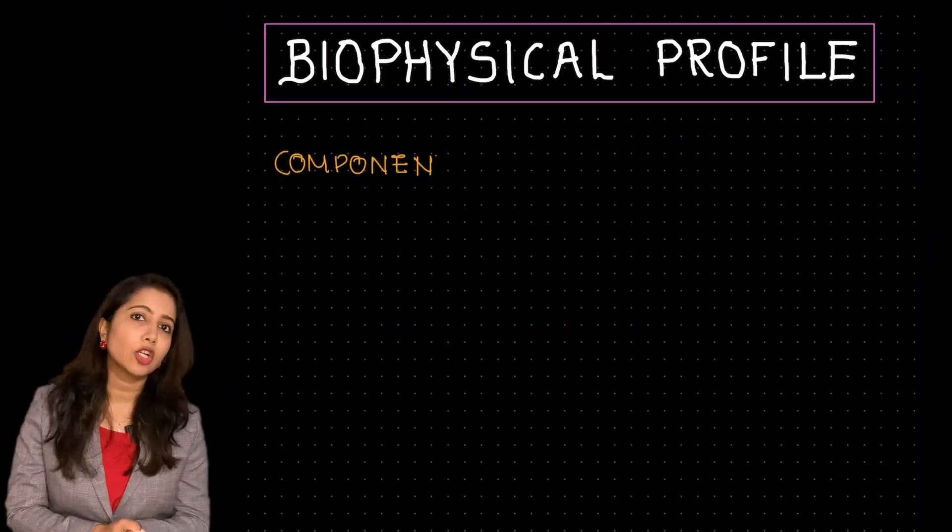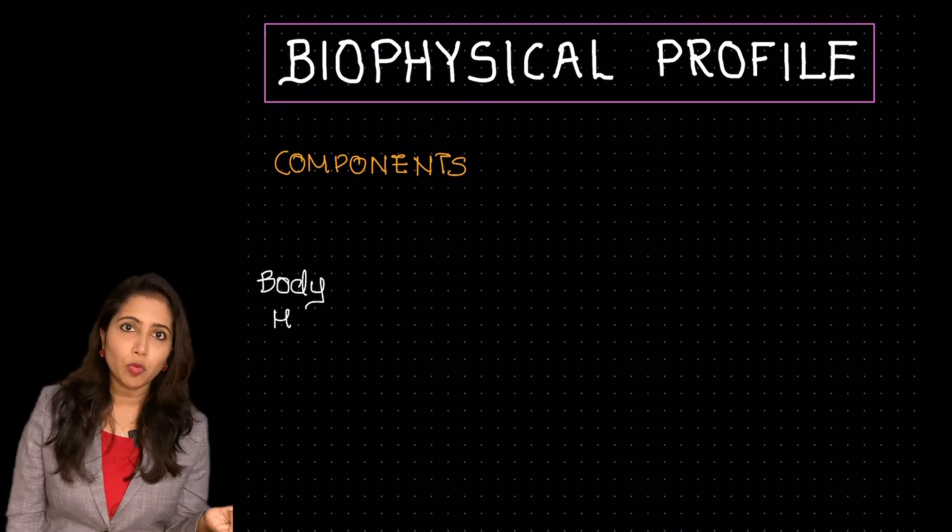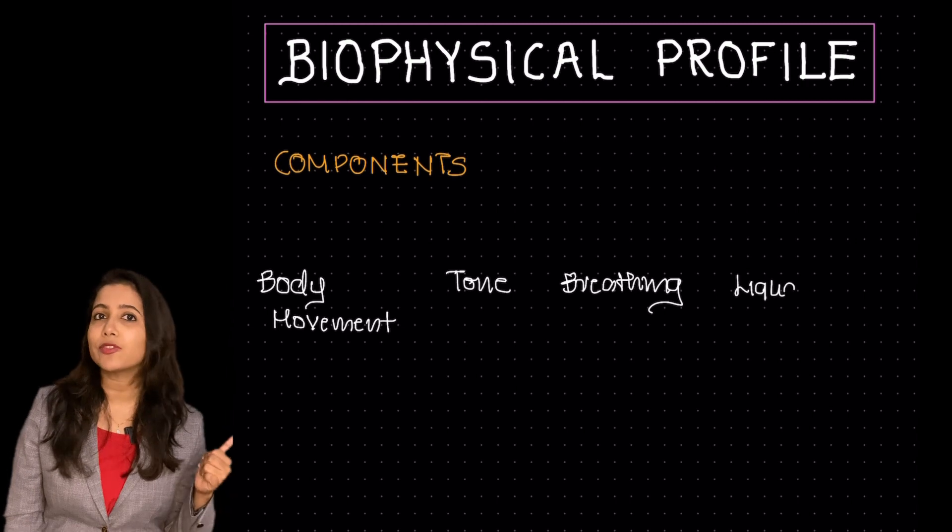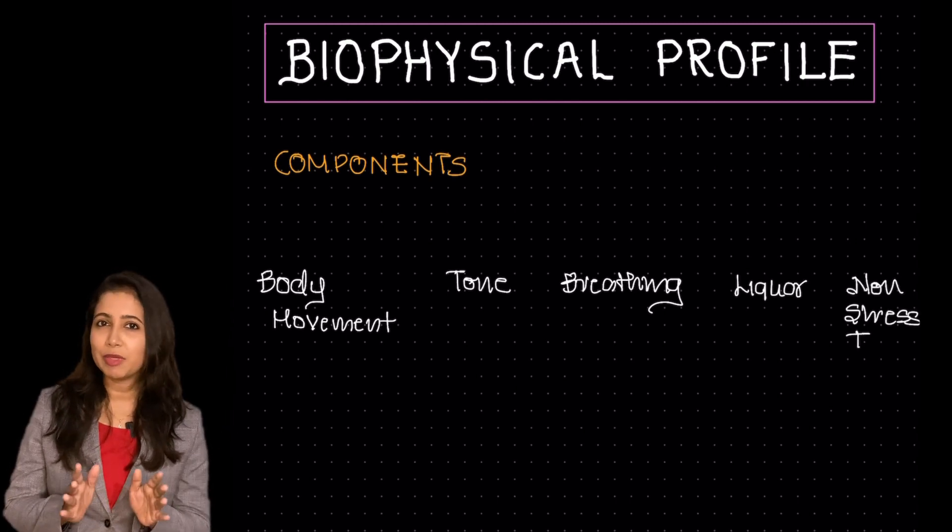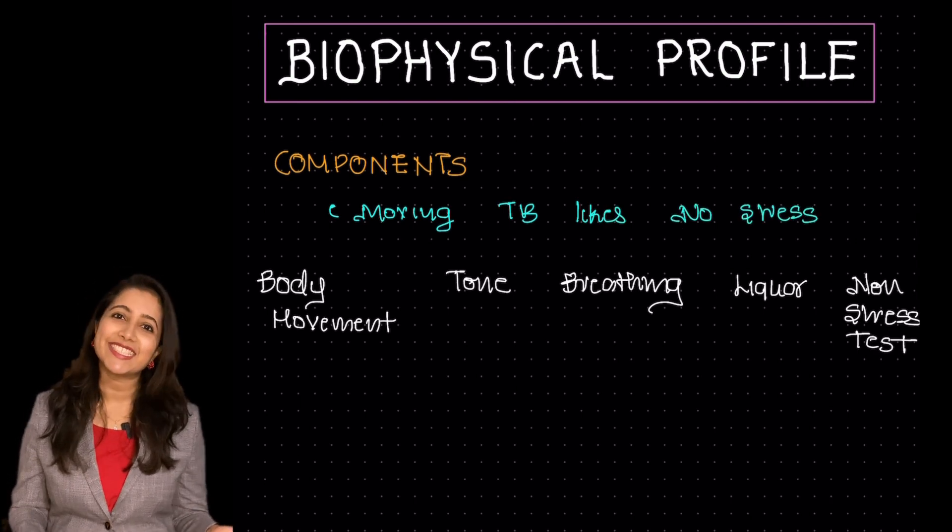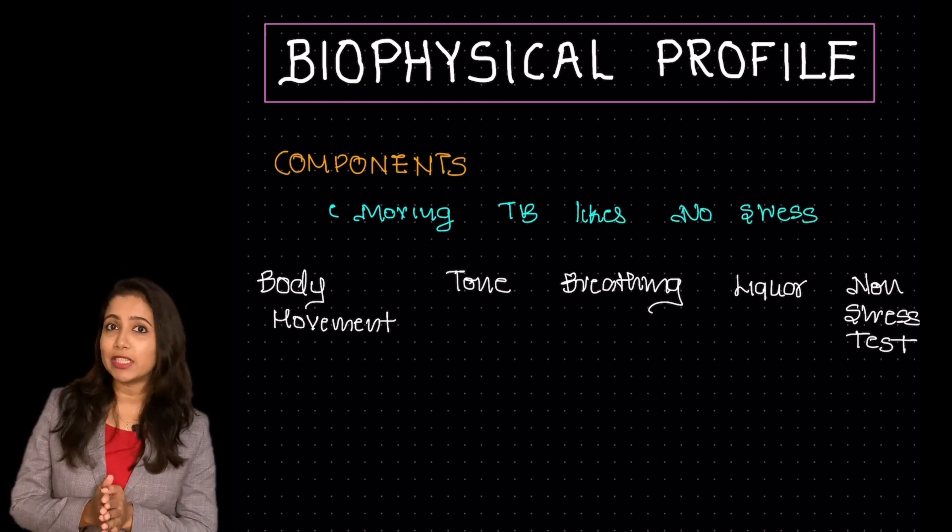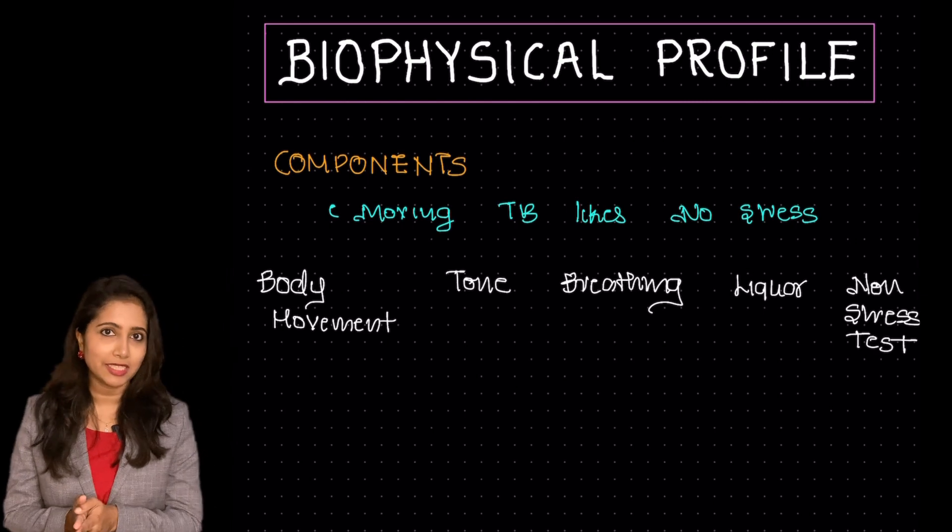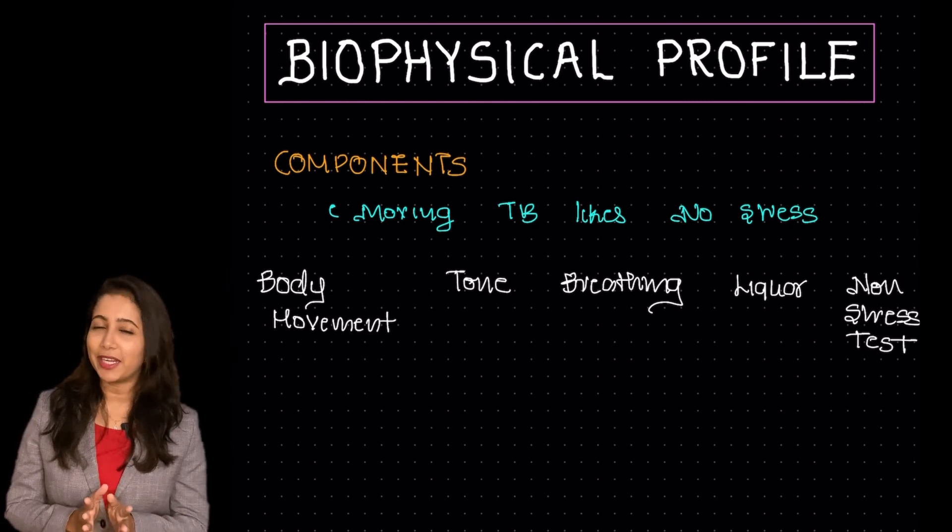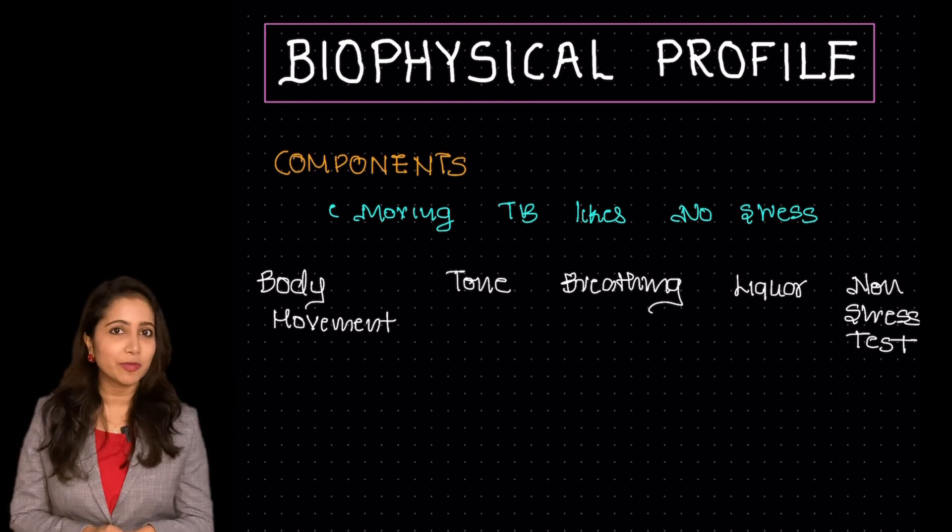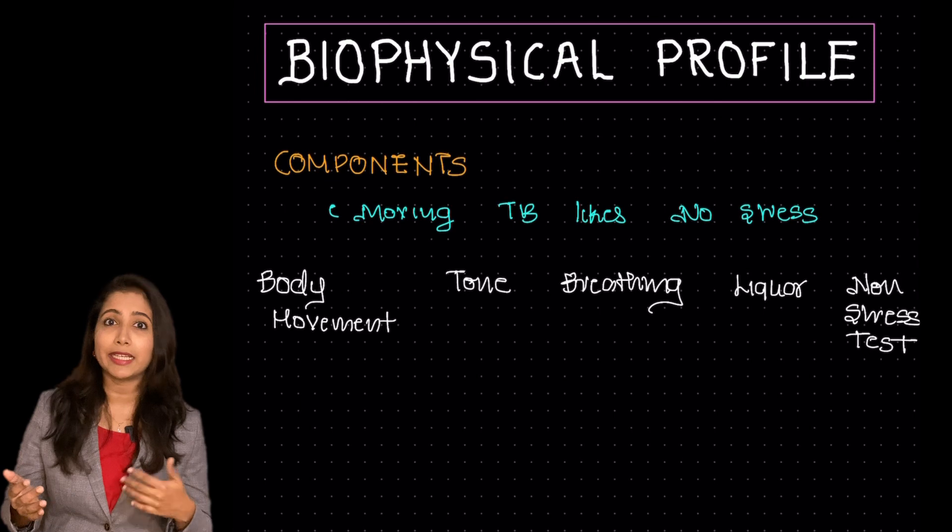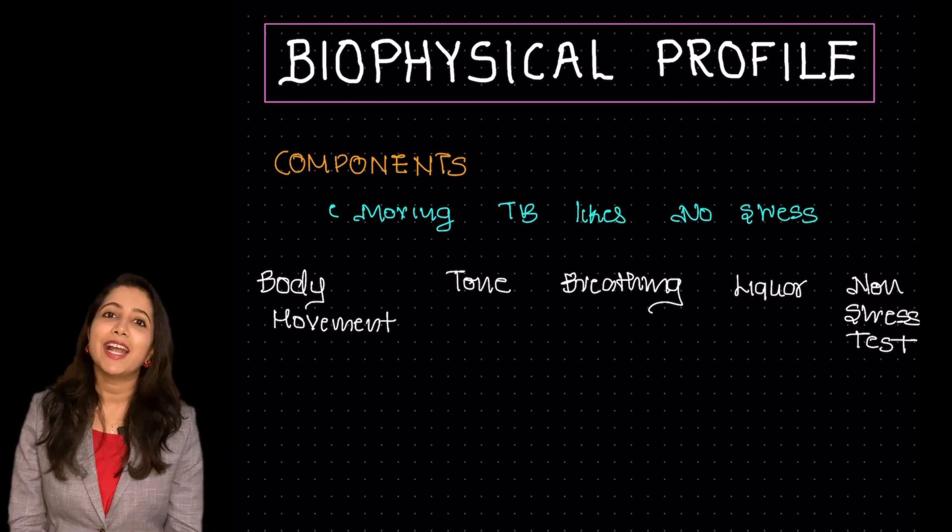The components include the gross body movements, the tone, breathing, liquor as well as non-stress test. You can remember this with the simple mnemonic that is moving TB likes no stress. So just like us, even the moving tuberculous bacteria likes no stress in his or her life. Pardon me for the silly mnemonics but believe me these are going to help you in the long run when you have to understand and study a lot of things.